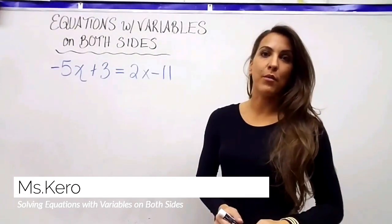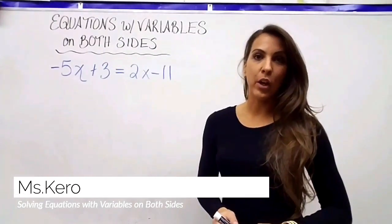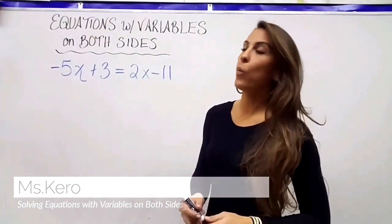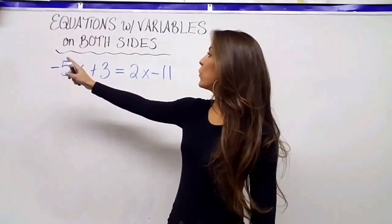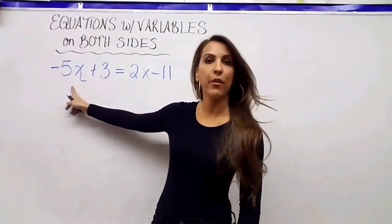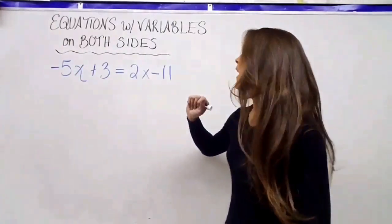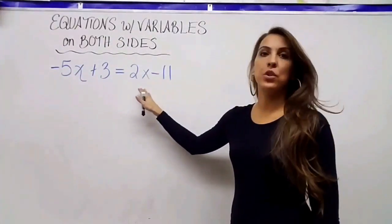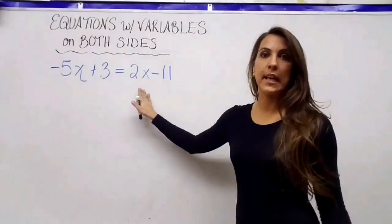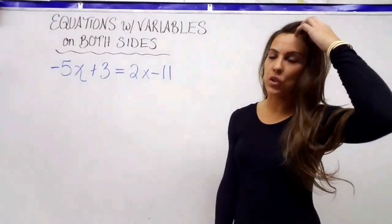We are now going to solve equations that have variables on both sides. We have a negative 5x on the left side of our equal sign and we have a 2x on the right side of our equal sign.